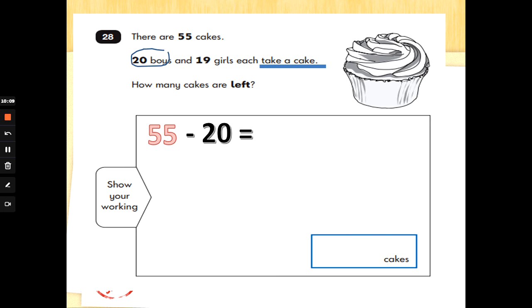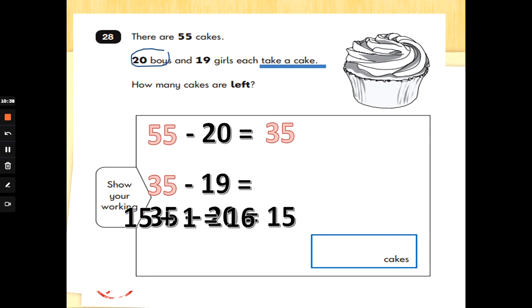And then the girls take 19 from what's left. So we've got 35 cakes left. We need to do 35 take away 19. Now the quickest way to do that is to round up. 19 is very close to 20. So I would do, because it's quicker and easier, I would do 35 take away 20. It's 35, 25, 15. But I only meant to take 19 away. So I can add one back. 15 add one is 16.